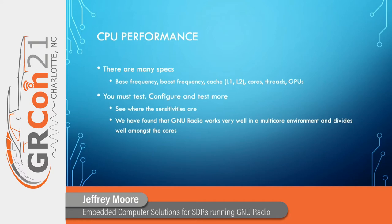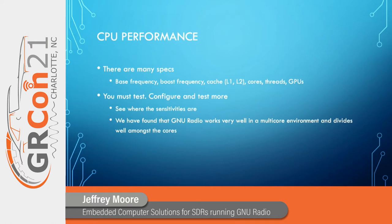The number of cores does matter. We've seen many situations where more cores really makes a difference. In particular, GNU Radio divides well amongst the cores without having to do a lot of manual work. A four-core processor will run something in each core one quarter of the time it would take a single core. You really have to test with your particular OS, your version of GNU Radio, and your application to see what works. We've found no substitute for that.